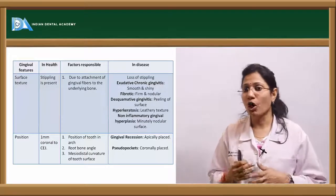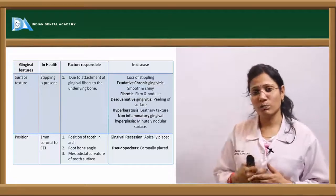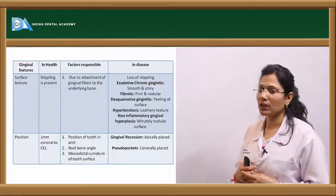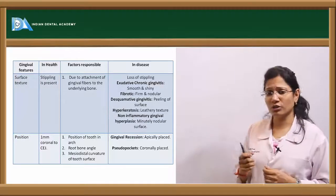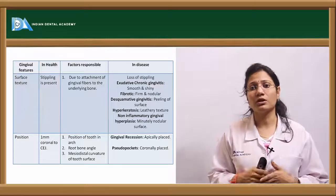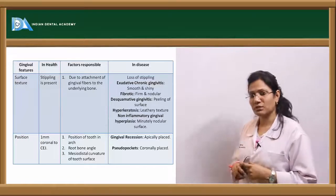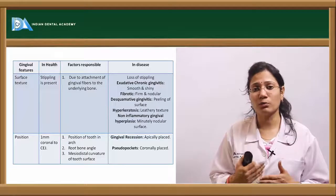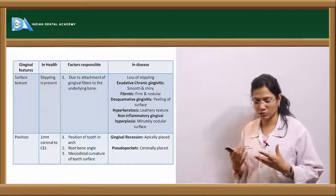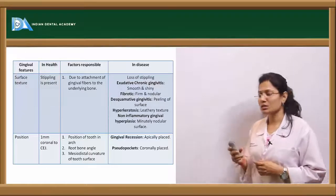The normal position of the gingiva is about 1 mm coronal to your cementoenamel junction. Factors responsible for keeping it in position include the position of the tooth in the arch, the root-bone angle, and the mesiodistal curvature of the tooth surface. Gingival recession is the apical shift of the marginal gingiva leading to exposure of root surfaces. In recession, the gingival position is apical to the cementoenamel junction. In pseudopockets — an enlargement condition — the gingival margin is positioned much more coronal to the cementoenamel junction.